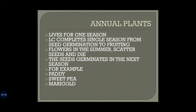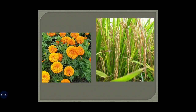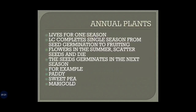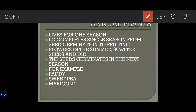You would notice that such plants flower during the summer or during the winter — that means in either of the seasons. The seeds are produced, then scattered, and the plant dies. So the life span of the plant gets over in a single season itself.